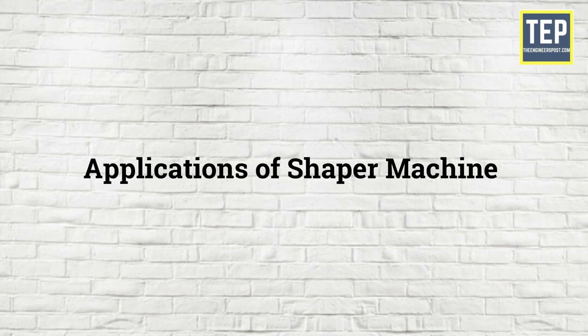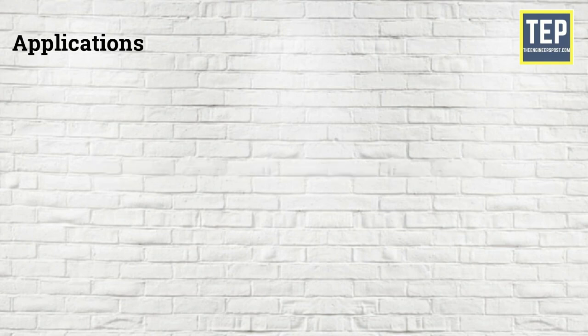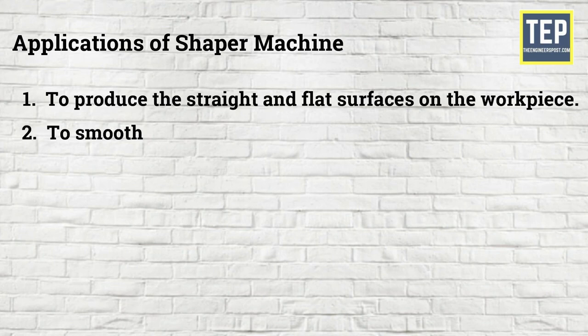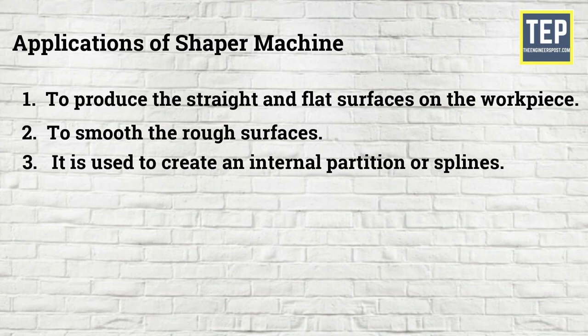Application of Shaper Machine: The Shaper Machine is used to produce the straight and flat surfaces on the workpiece, to smooth the rough surfaces, and it is used to create an internal partition or splines.